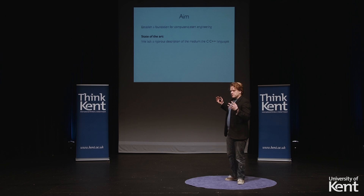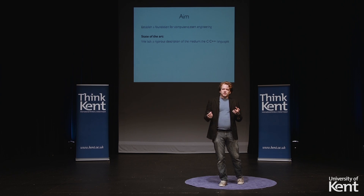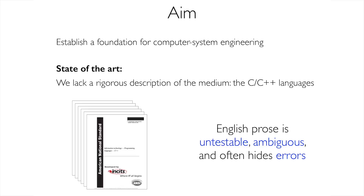You might think that solid basis already exists, but I'm going to make the case that it doesn't. The current state of the art is that computer systems are generally built in C and C++, and that language is defined with an enormous prose specification — about 1,300 pages of very complicated text. Prose is generally untestable, it's ambiguous, and it can hide errors really easily. In fact, this specification was hiding some errors, which I'll show you later.